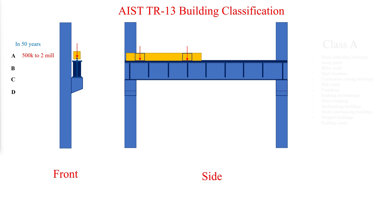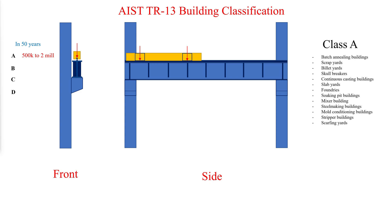It is recommended that the following building types be considered as Class A. Class B is a building in which members may experience a repetition of 100,000 to 500,000 cycles of a specific loading, or 5 to 25 repetitions of such load per day for a life of approximately 50 years.